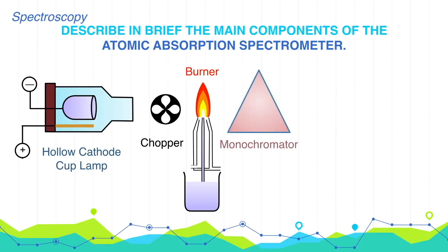4. Monochromator. Either prisms or diffraction gratings are used as the monochromator. The transmitted beam from the flame enters the monochromator, which separates the beam of light into different wavelengths. Only one wavelength is allowed to pass at a time to the photomultiplier tube.